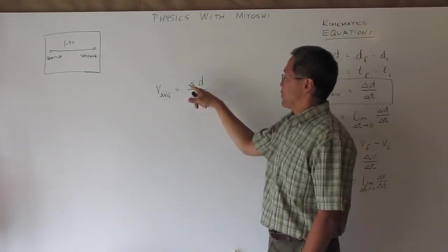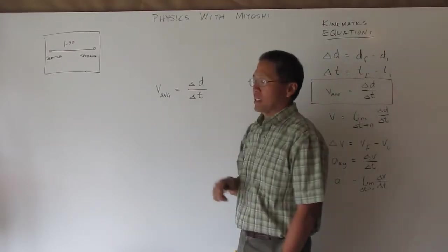The average velocity or average speed is displacement, change of displacement over a change in time.